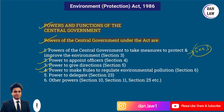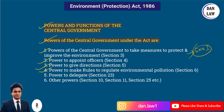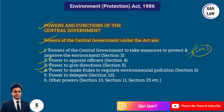Section 23 deals with the power to delegate. Without prejudice to the provisions of Section 3, the central government may, by notification in the Official Gazette, delegate subject to such conditions and limitations as may be specified. This means that whatever rules and regulations the central government has the power to publish, it can delegate that power, and such rules can be implemented as law when required.